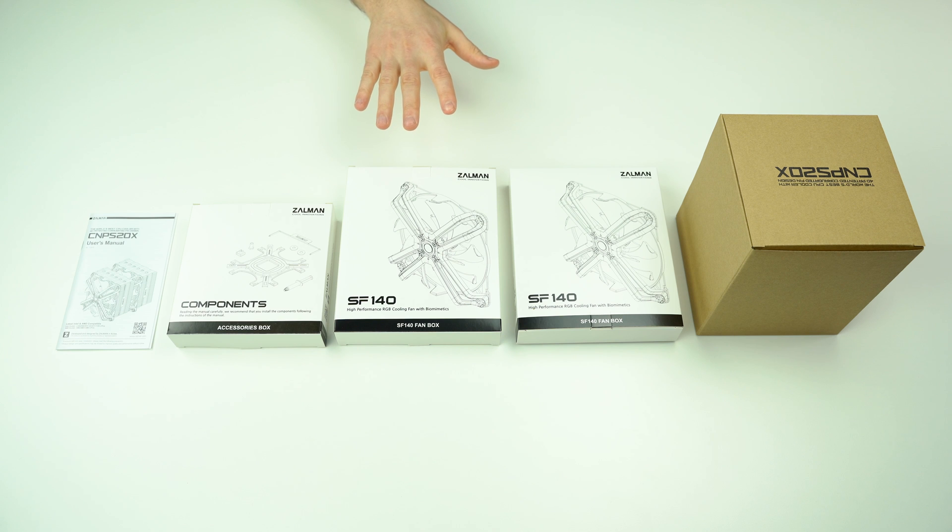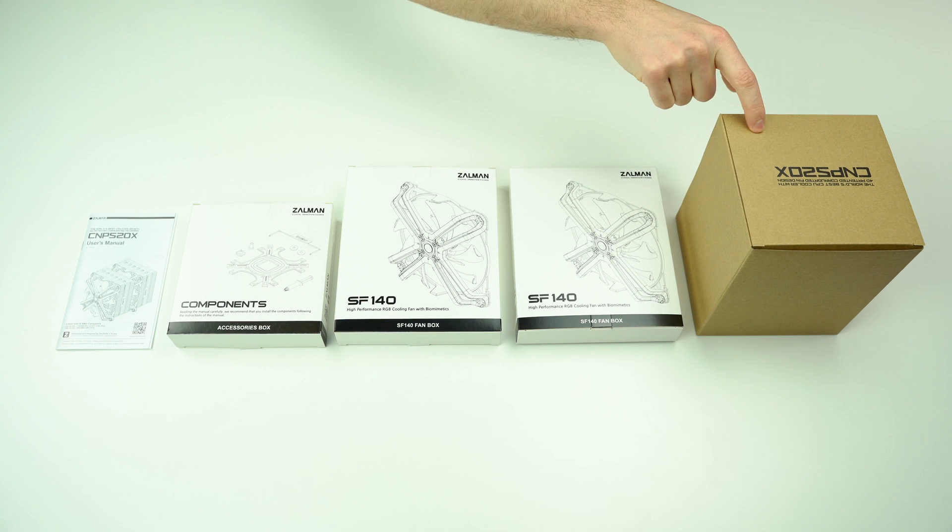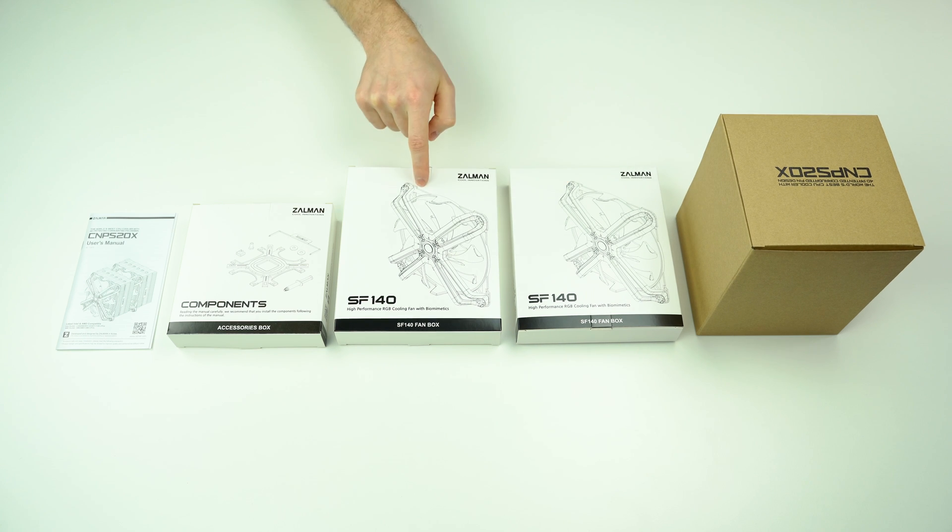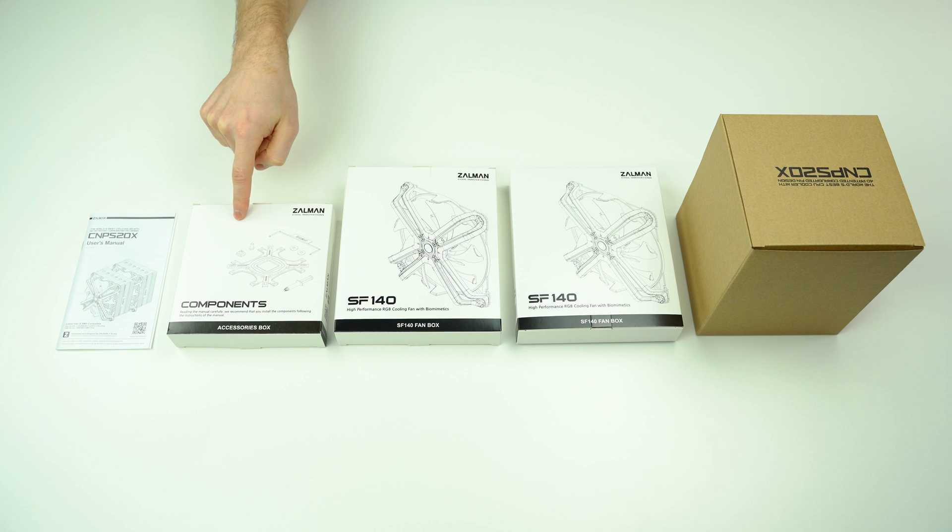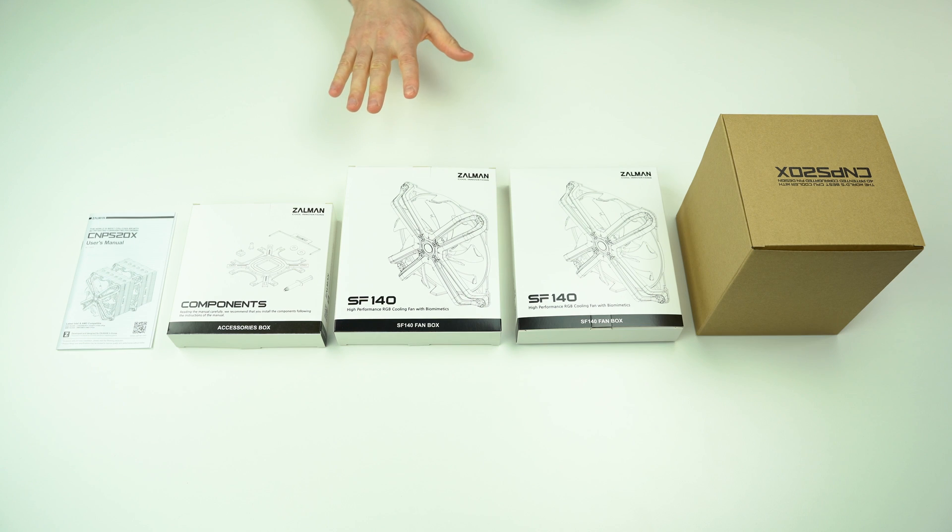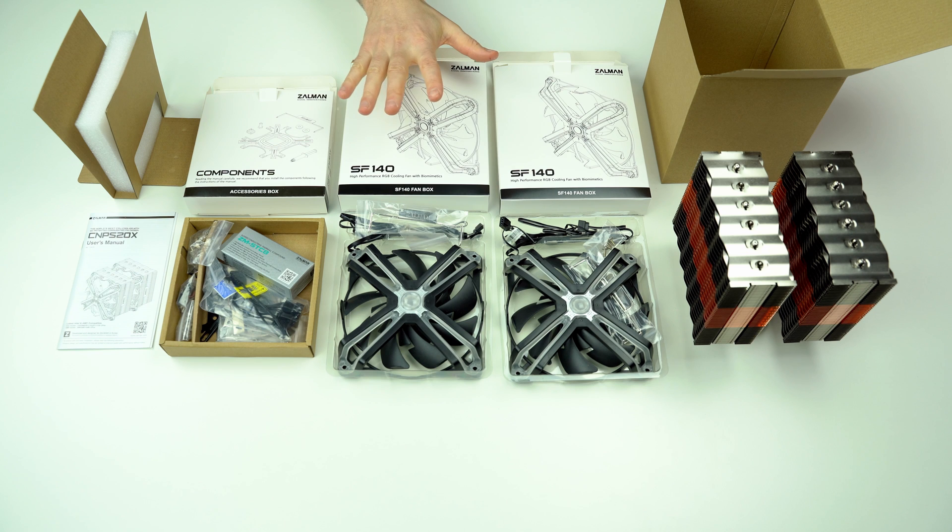What's included are these five items: the heatsink, two 140mm fans, components for attaching the heatsink to the motherboard, and the user's manual. Let's unpack them and see what's inside. This is how it looks after opening. I'll clear the empty boxes and put everything on the table.